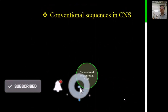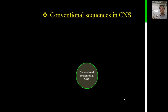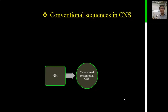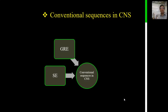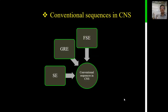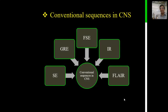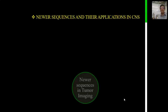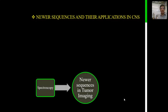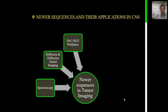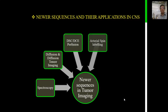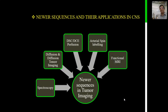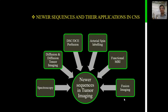The routine conventional sequences in tumor imaging in the central nervous system have moved from simple spin echo sequences, gradient echo sequences, fast spin echo sequences, inversion recovery sequences, and FLAIR sequences to many new basic and advanced sequences — including MR spectroscopy, diffusion and diffusion tensor imaging, perfusion imaging, arterial spin labeling without contrast injection, true functional imaging with BOLD imaging, and fusion imaging.